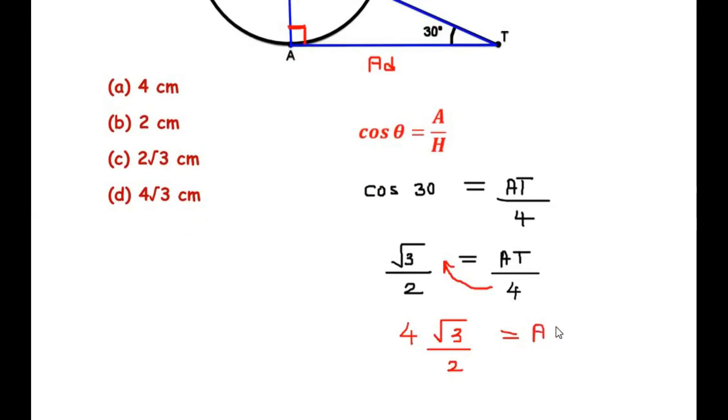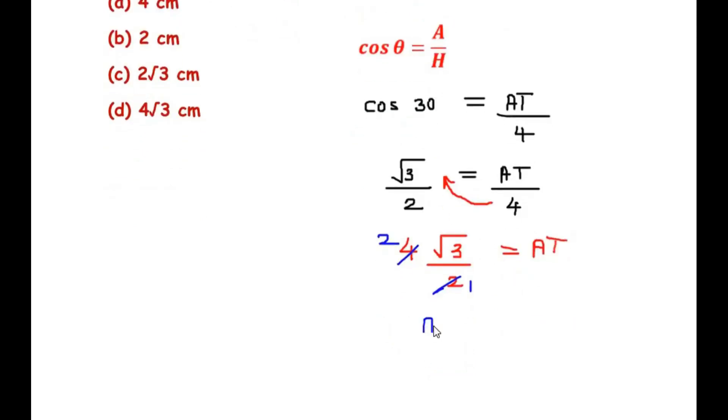Now we can divide the 4 and 2. So 2 times 2 is 4. So we have got the value of AT as 2 root 3 centimeters.